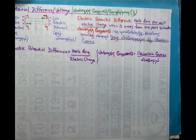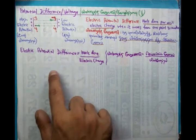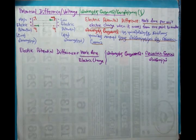Let's now try to put this into an equation. This is going to be the equation. Electric potential difference is equal to work done over electric charge.